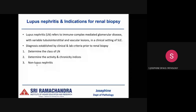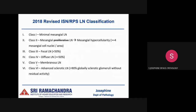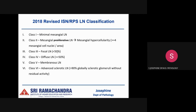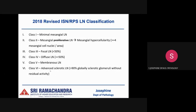This is the 2018 revised ISN/RPS lupus nephritis classification. Class 1 is minimal mesangial lupus nephritis. Class 2, now called mesangial hypercellularity lupus nephritis (replacing 'proliferative'), refers to ≥4 mesangial nuclei per area. Classes 3 and 4 are characterized by capillary wall deposits: class 3 involves less than 50% of sampled glomeruli, class 4 involves 50% or more. Class 5 is membranous lupus nephritis, and class 6 is advanced sclerosing lupus nephritis involving more than 90% globally sclerotic glomeruli.